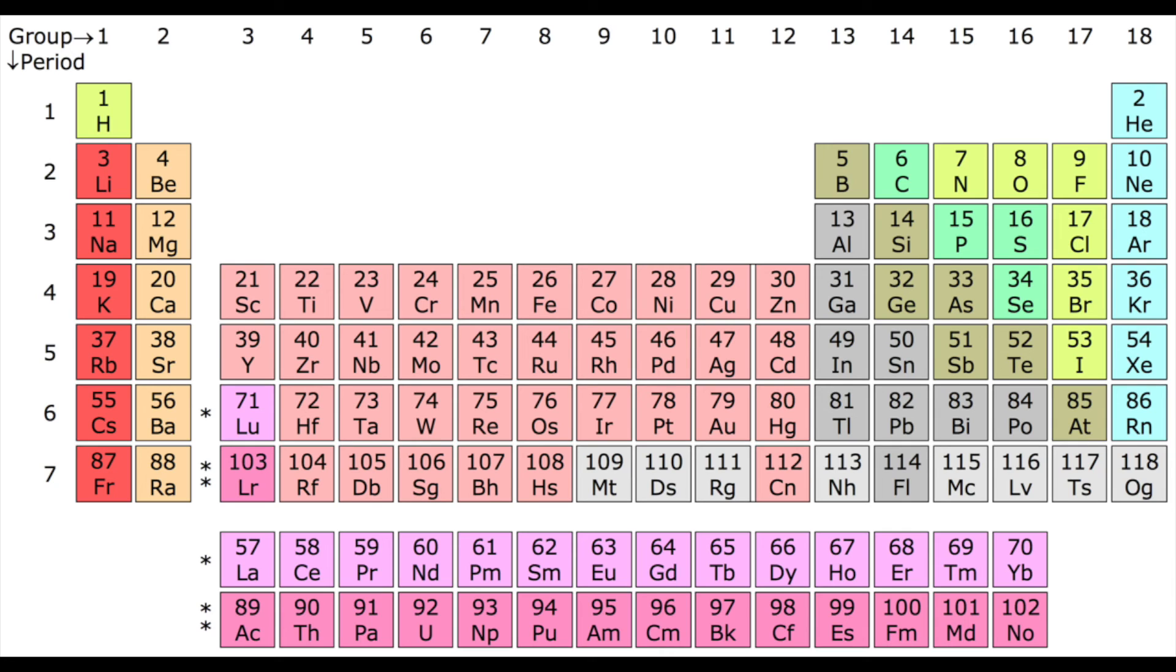Then it starts to change a little bit in which starts with nitrogen and this is group 5 but this means to get a full outer shell they have to gain three electrons. This is why nitrogen could bond with something like boron because boron has to lose three electrons and nitrogen has to gain three electrons and it could bond easily.